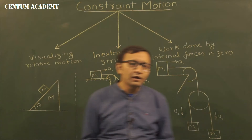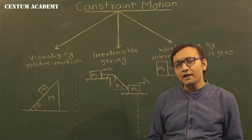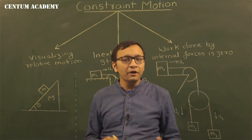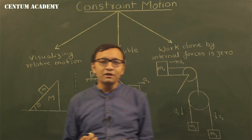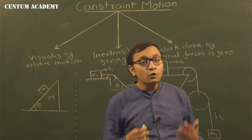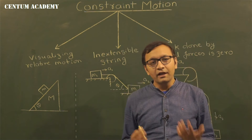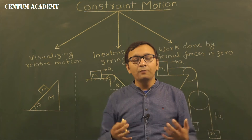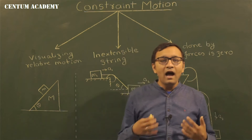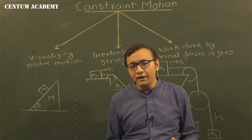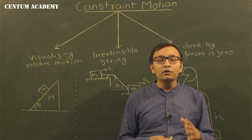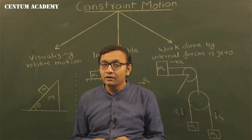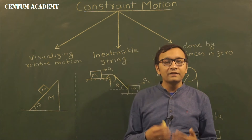Today we are going to take up a very important topic in the laws of motion chapter, and this topic is constrained motion — also called connected motion. Constrained motion happens because one body is constrained to move in a certain manner. There is no special physics behind it, just that the system has some sort of constraint. For example, an object moving on the floor can only move horizontally, and an object sliding down an inclined plane can only move along the incline.